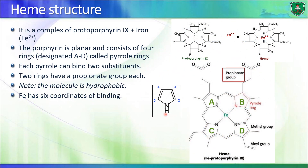The heme molecule is derived from a precursor known as protoporphyrin IX, except that it is associated with iron, and this iron is in the ferrous state. The heme molecule is composed of four pyrrole rings — similar to how other rings are named, like the imidazole ring in histidine or the indole ring of tryptophan. These four rings are designated A, B, C, and D.